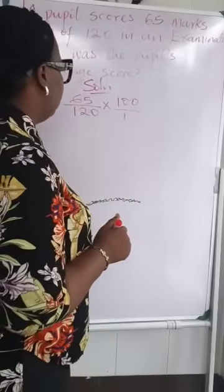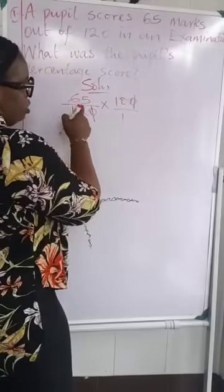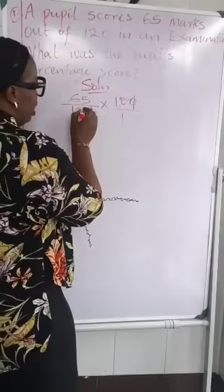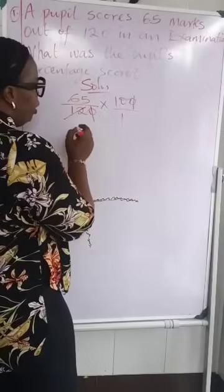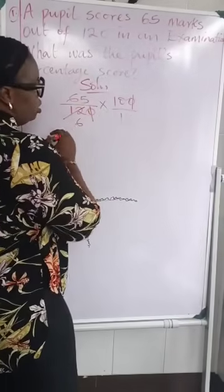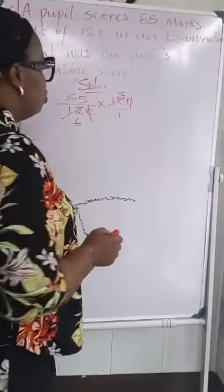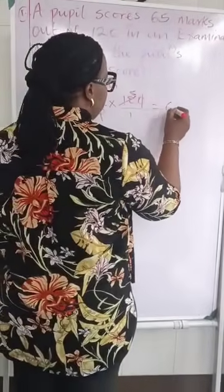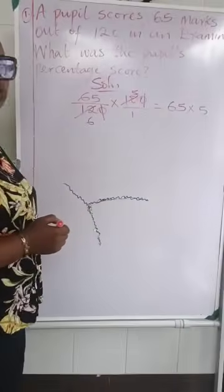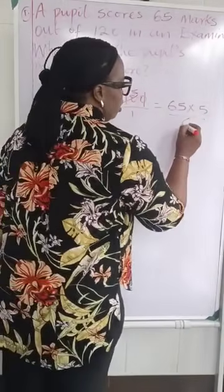Now let's look at it. We have the zero cancel the zero here, giving us 65 over 12. Can anything still divide? Yes, 2 can. 2 going into 12 gives us 6, and 2 going into 10 gives us 5. So we are going to have 65 multiplied by 5, all over 6.